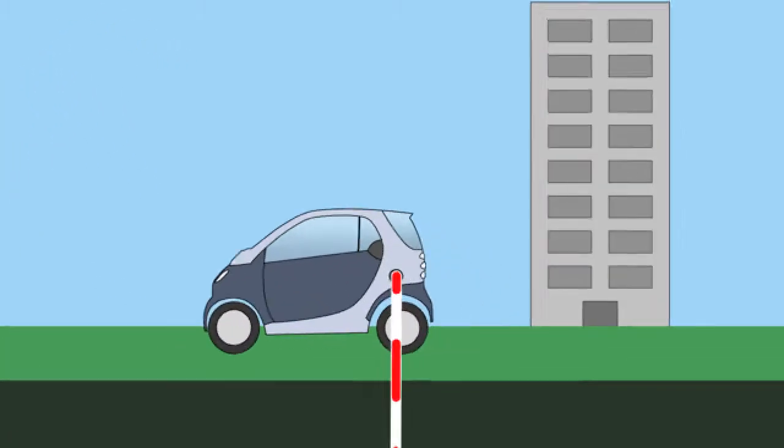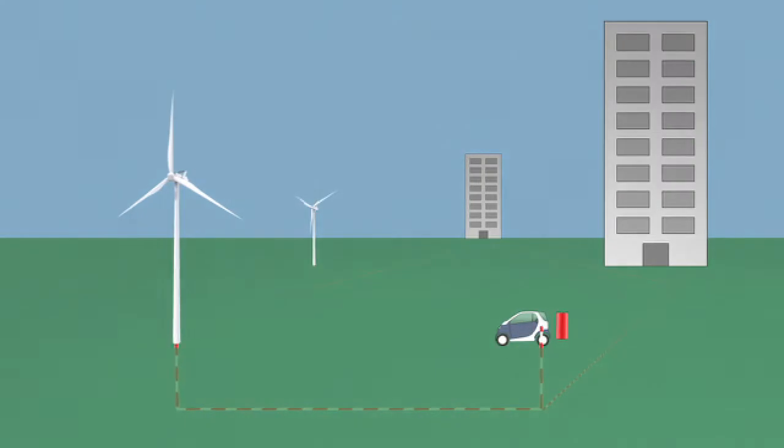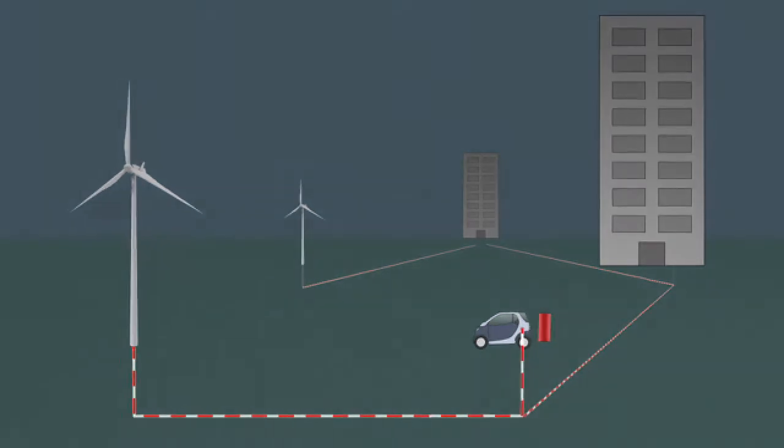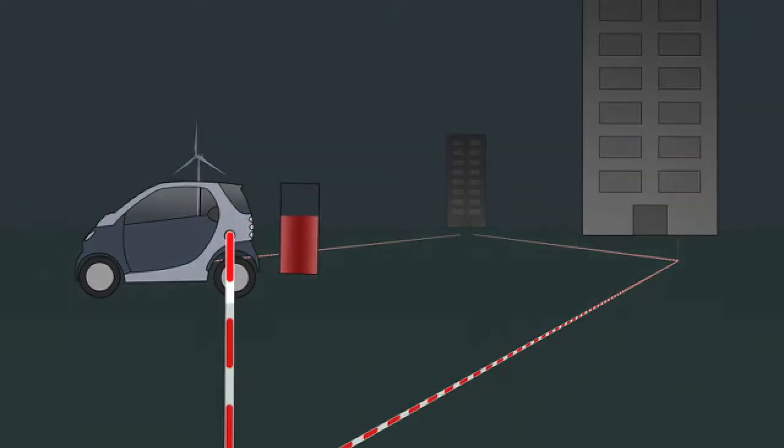What's more, and what's even cleverer, is that the car can be used as storage. One of our challenges is that the wind doesn't blow all the time. So when the wind isn't blowing, the intelligent grid can use some of the energy in the car to power the grid.